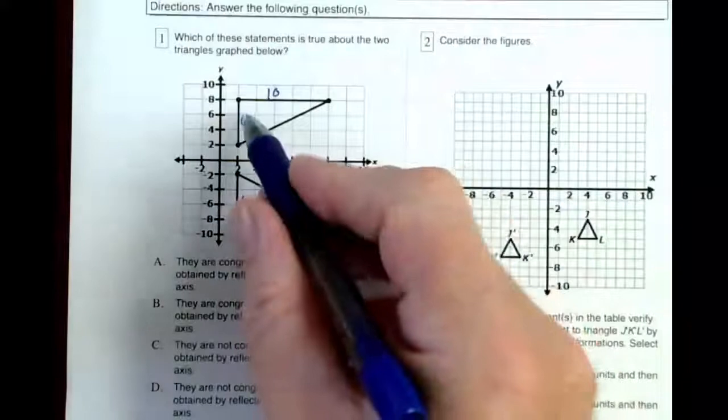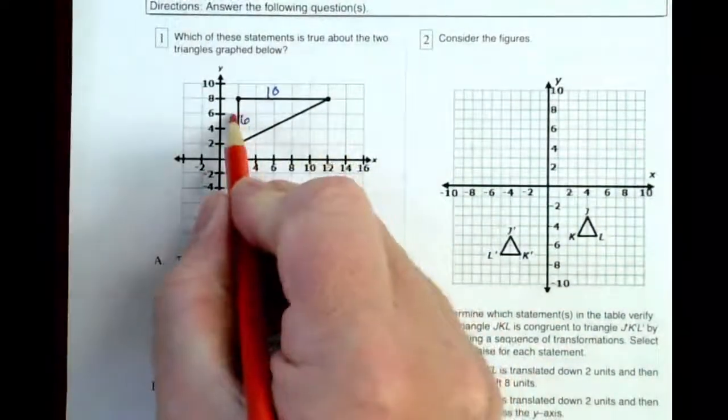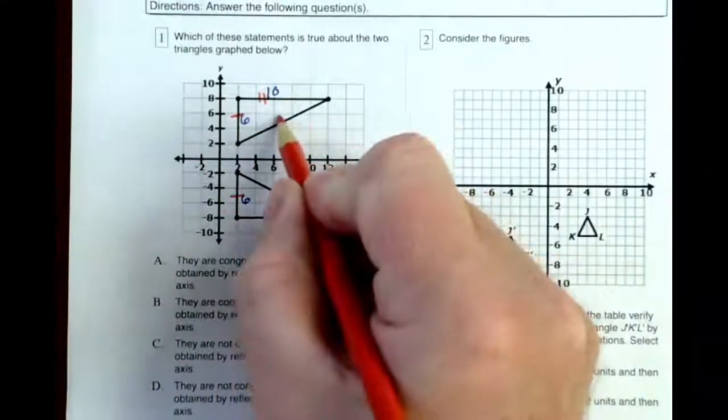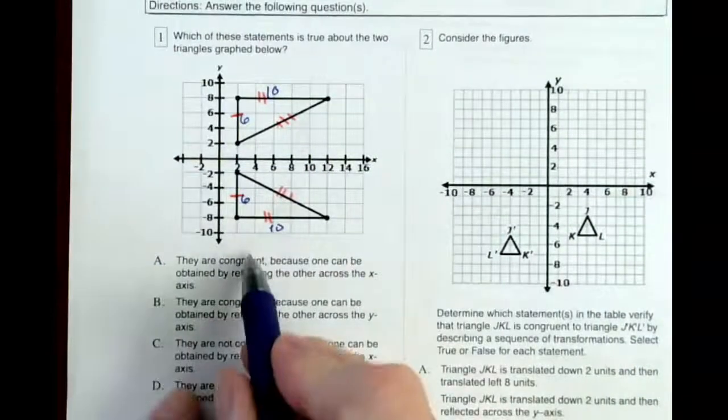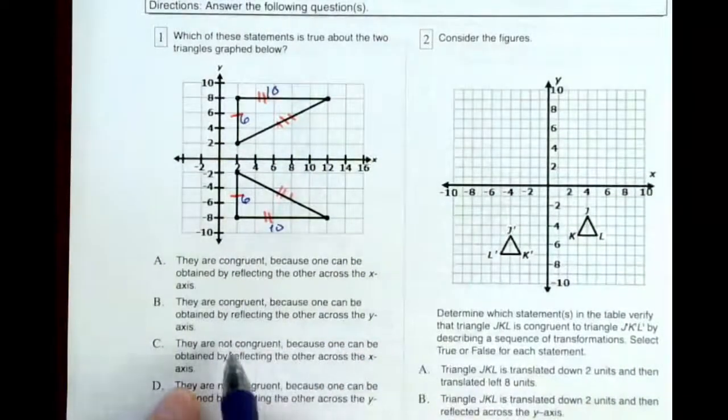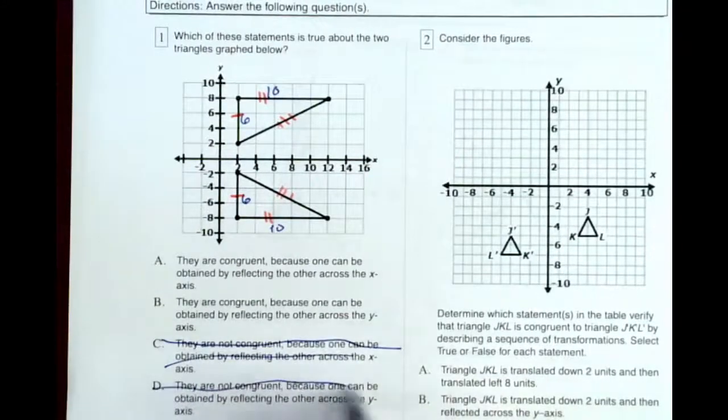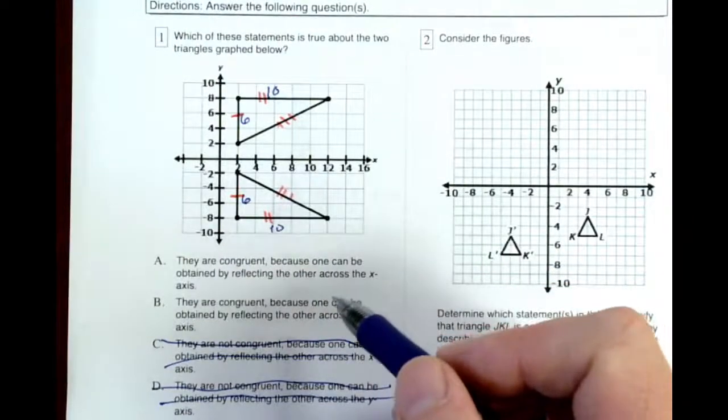So that means that these triangles have to be what we call congruent. Because this side is congruent and this side, and that means that the third side would be congruent. Which means only the congruent statements would make sense. Them being not congruent wouldn't make sense. So we can eliminate C and D here. Now we just have to figure out which of these two is true.